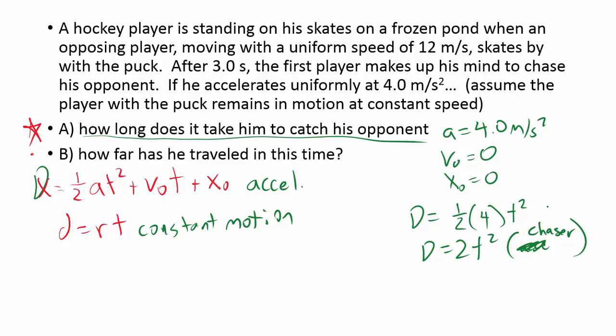Now, the person who's being chased, or the skater, this person is traveling at a constant speed. So again, you could think of this using d equals rt, but to try and keep everything connected, I'm still going to use this formula here. If this person is moving at a constant speed, we know that their acceleration is going to be zero. They're not accelerating anywhere. They're just going at a constant speed. Their initial velocity, they told us, was 12 meters per second.